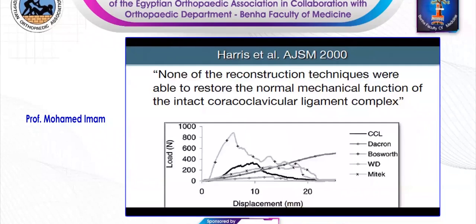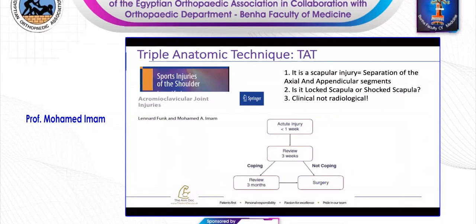The third tip: it's not all about CC ligaments. The acromioclavicular joint ligaments and the deltotrapezial fascia play an integral and crucial role in stability. That's why 100 techniques addressing only one of these variables have failed over the years. Harris demonstrated that none of these reconstruction techniques were able to restore the normal biomechanics of the ACJ. So I would prefer undertaking what I call the triple anatomic technique, bearing in mind that it's a scapular injury and you're managing patients clinically. In our book chapter, we published this algorithm: see patients at one week. If they are coping, three weeks. If they are coping, review again in three months — the coping versus non-coping approach.